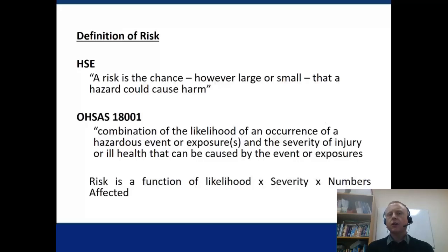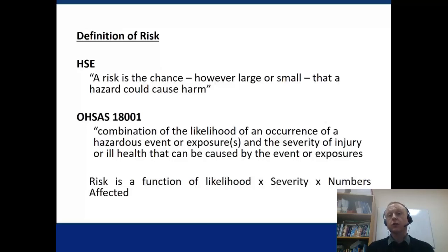Just remember: it's not the existence of the circular saw as an object that is a hazard. It is contact with the moving parts of the circular saw that has the potential to cause harm. The risk from the harm caused by that circular saw is how likely that person is to come into contact with the moving parts, how severe the harm outcomes will be, and how many people that's going to affect. Separate out the thing with the potential to cause harm from the likelihood and the severity — likelihood and severity give you the level of risk from the hazard.